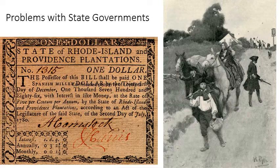States had their own problems with money. Many states, just like the Continental Congress, printed so much money that they caused rampant inflation and all sorts of economic problems. Rhode Island was the worst culprit — the same state that refused to let Congress tax wanted to print as many dollar bills as it could. You might wonder: what's the big deal?